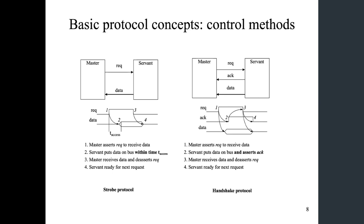The second step, the servant puts data on the bus and asserts ACK. This asserting of the ACK is important if the servant cannot guarantee the t-access time. In the strobe protocol, the t-access time is agreed upon by both sides, but if there's no such fixed t-access time — it could be variable, long, or short — the servant could take longer or shorter to put valid data on the bus. With this ACK signal going from servant to master, the servant can say: when you see my ACK asserted, you know my data is valid.